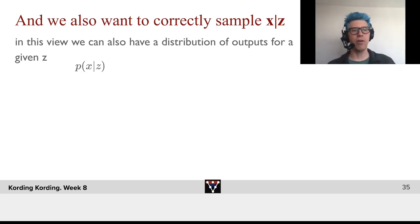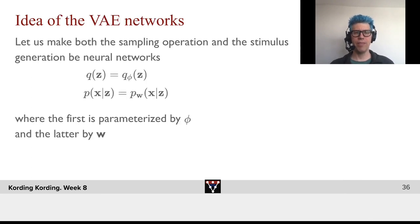In this view, we can also have a distribution of outputs for a given z, p of x given z. Now what's the idea of the VAE networks? Let us make both the sampling operation and the stimulus generation be neural networks, where we have q of z being one neural network parametrized by phi, and p of x given z be another neural network parametrized by w.